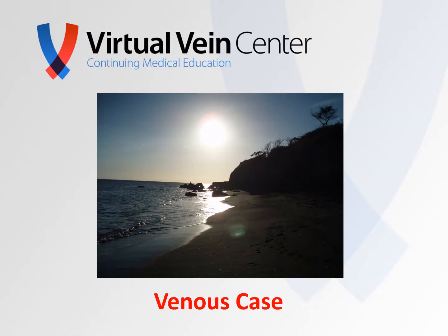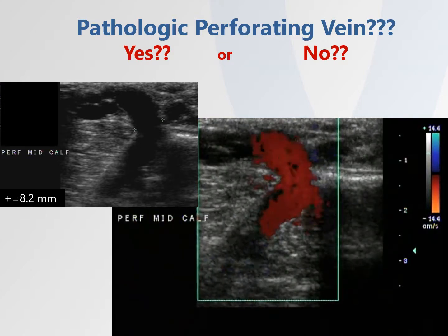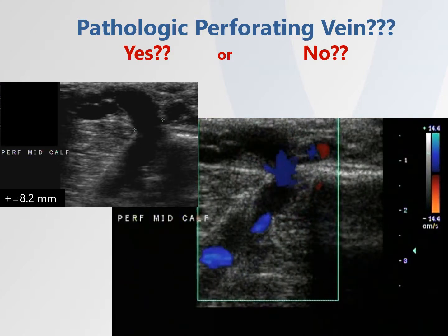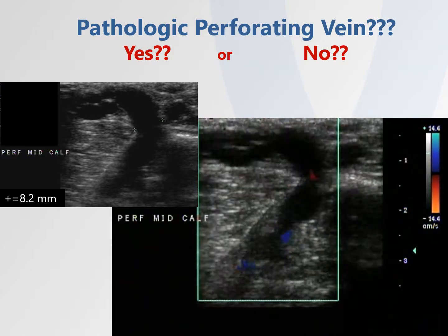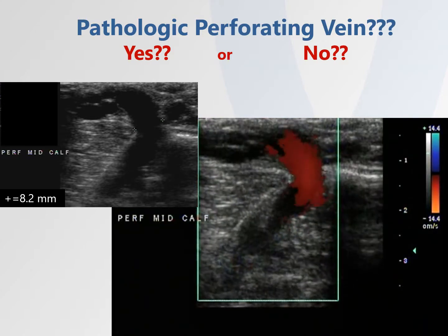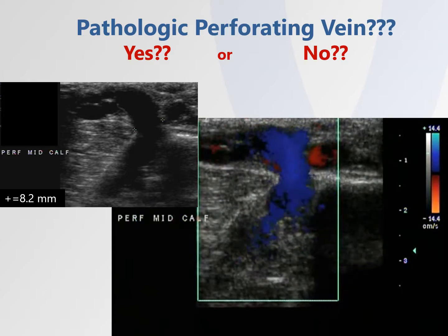Hey everybody, how you doing? Time for another venous case. Let's look at this mid-calf perforating vein. Looks pretty large — 8.2 millimeters.